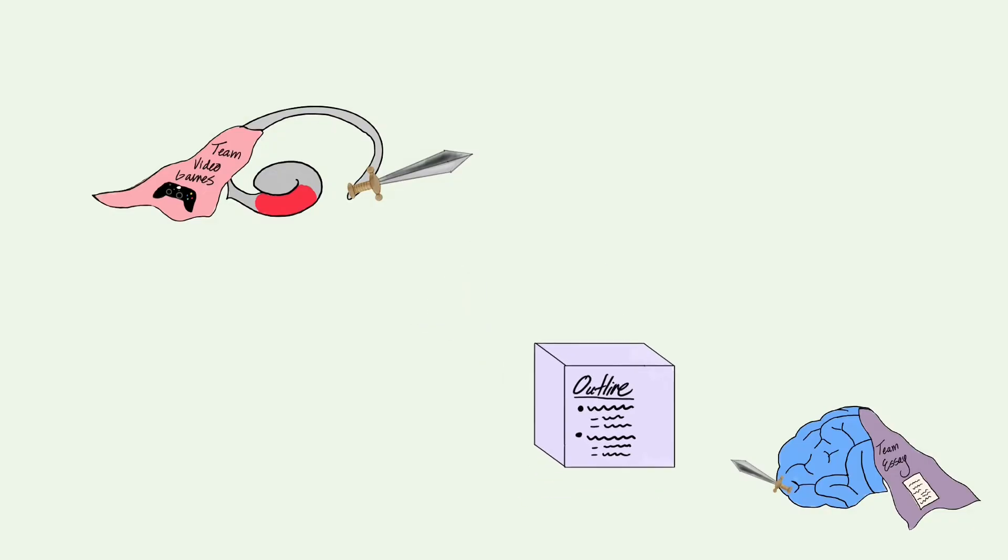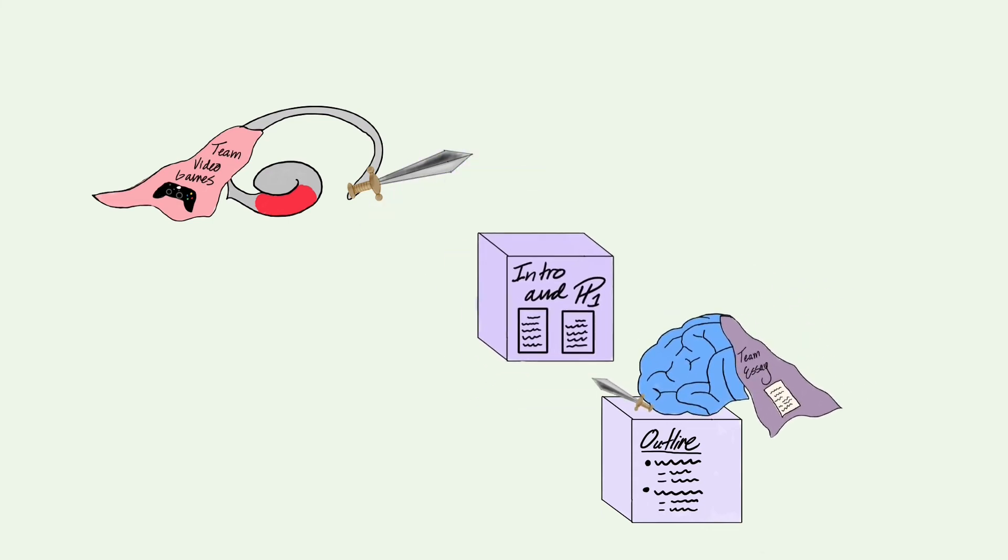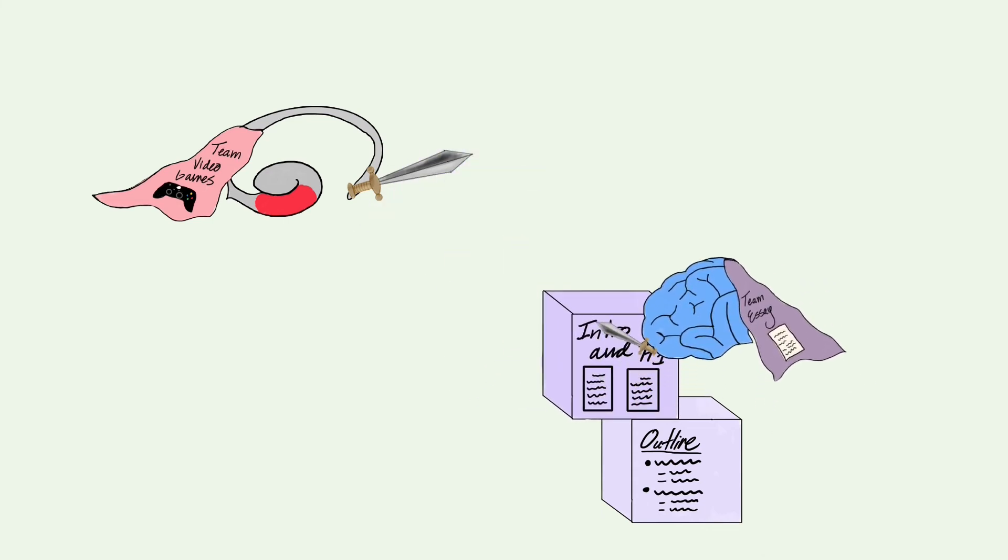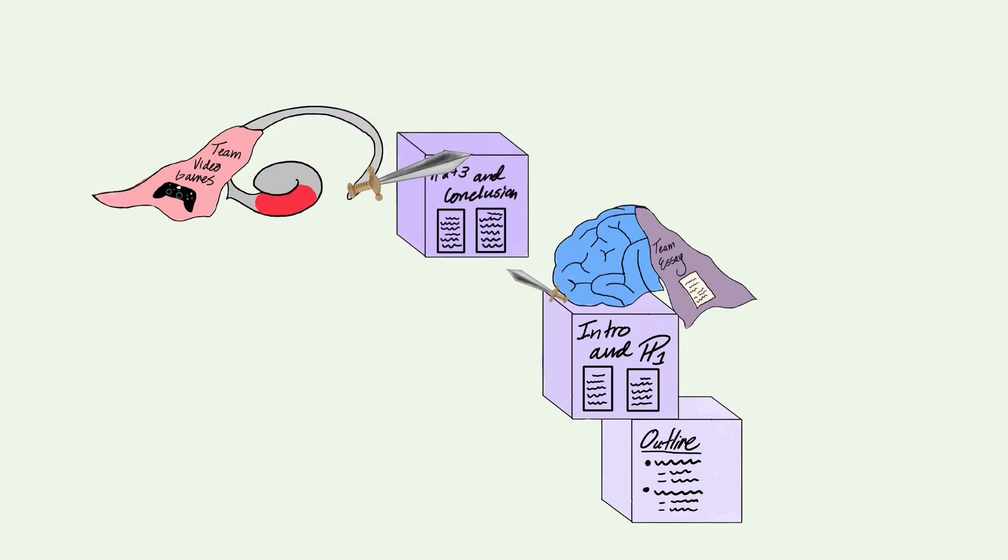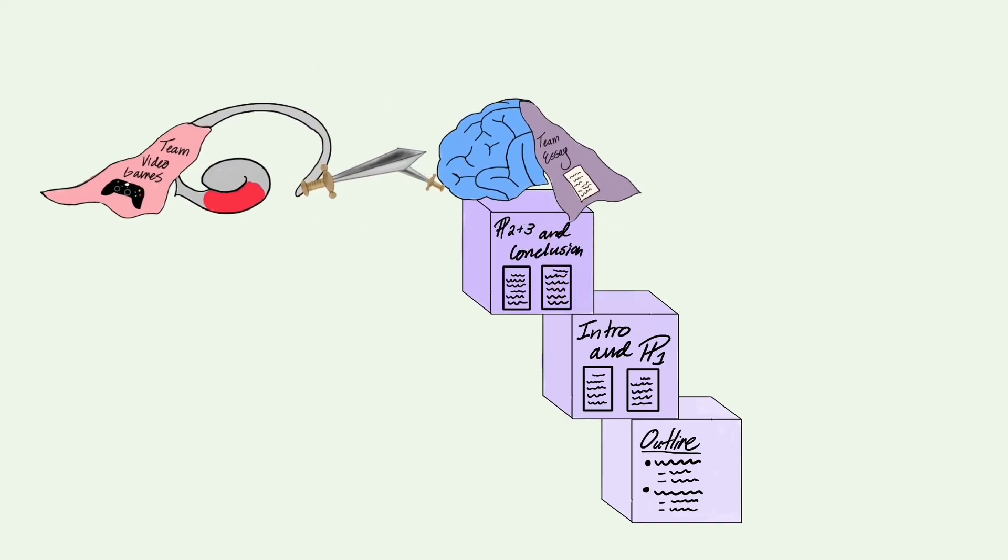The best way to avoid procrastination is to set a close deadline for a smaller piece of an assignment. The less time there is, the more adrenaline is released, which counteracts limbic actions. This is why chunking assignments is so important.